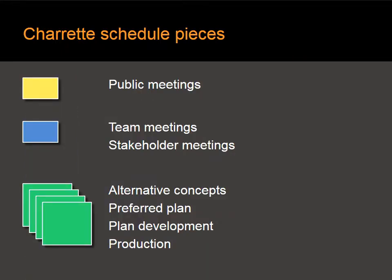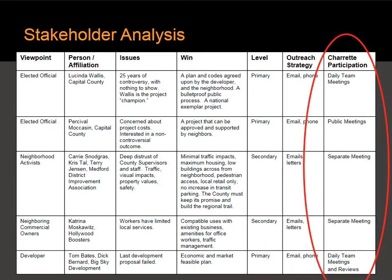You're going to create post-it notes to become pieces of your schedule. First, take small yellow post-it notes and make one for each public meeting in the charrette. Next, take a small blue or other colored post-it note to indicate team meetings and stakeholder meetings. Refer to your stakeholder analysis to find your stakeholder meetings. Look in the final column labeled 'charrette preparation,' and wherever you've indicated separate meetings, make a small blue post-it for each one and name the meeting.